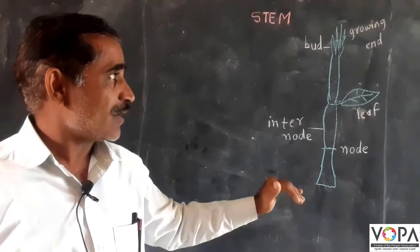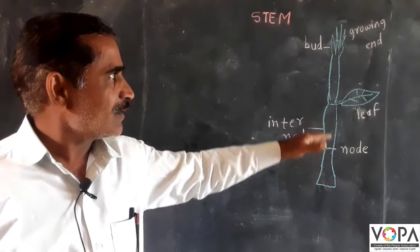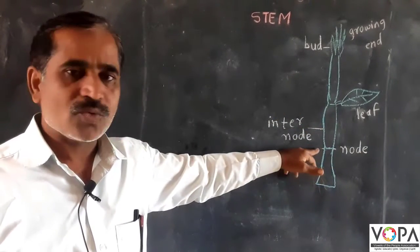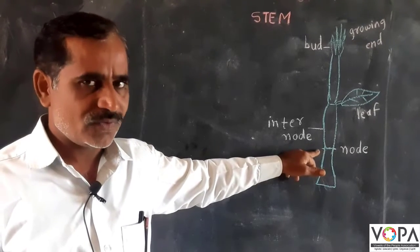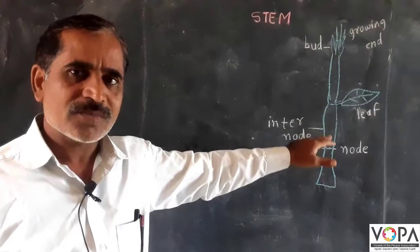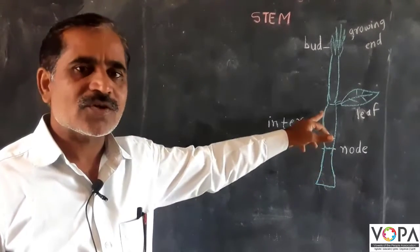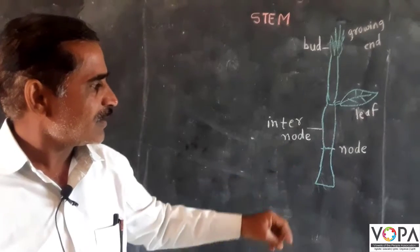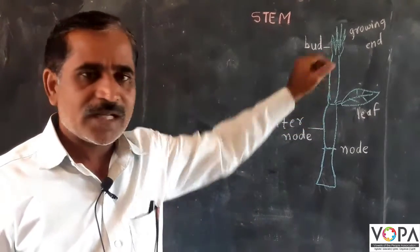Plumule. In the stem there are nodes, and at the nodes the leaf grows. The part of the stem between two nodes is called the internode, and there is the growing end of the stem.